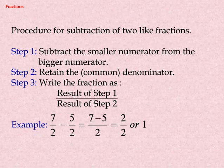Procedure for subtraction of two like fractions — Step 1: Subtract the smaller numerator from the bigger numerator. Step 2: Retain the common denominator. Step 3: Write the fraction as the result of Step 1 divided by the result of Step 2. Example: seven by two minus five by two equals seven minus five divided by two, equals two by two, or 1.